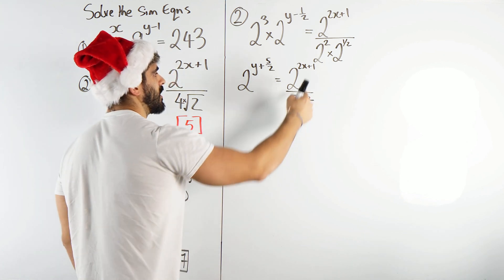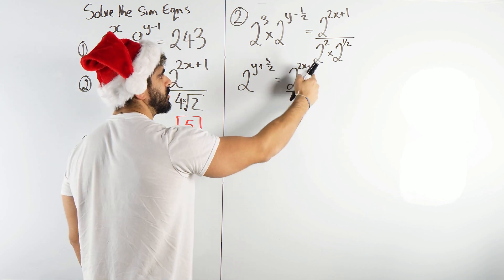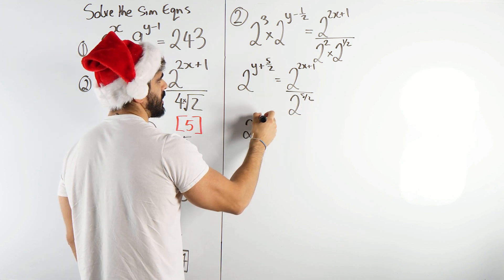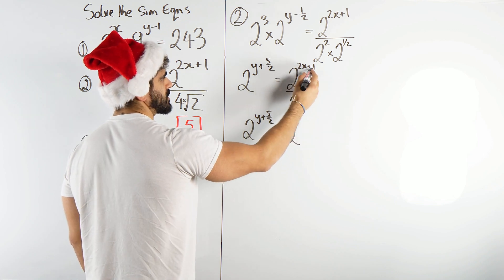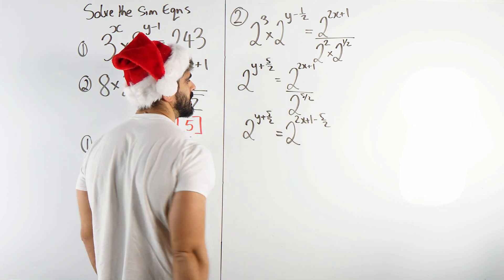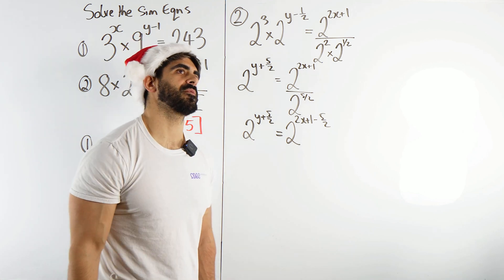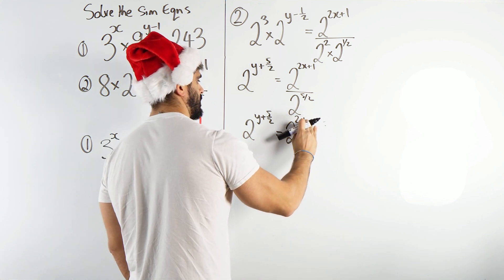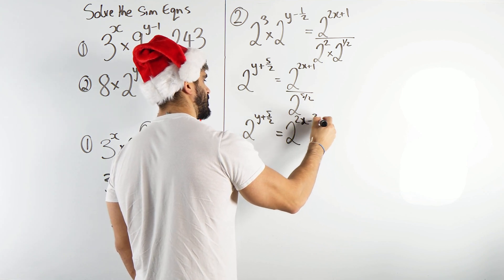But now we are dividing two numbers with the same base. So we subtract the powers. So we're going to be left with 2 to the power of y plus 5 over 2 is 2 to the power of, so we have 2x plus 1 minus 5 over 2. 2x plus 1 minus 5 over 2, which we can simplify. Yeah, you're going to get minus 1.5, which is minus 3 over 2. I'm just going to write that here with our whole new line. So you have minus 3 over 2.